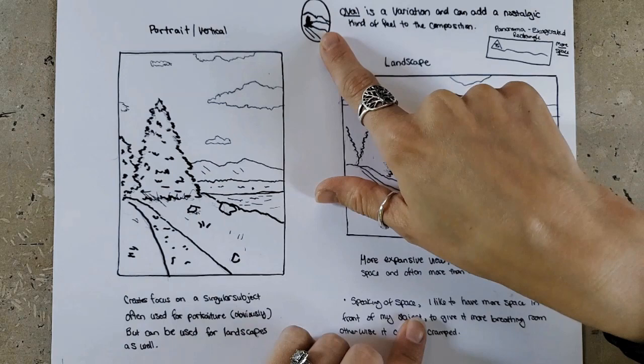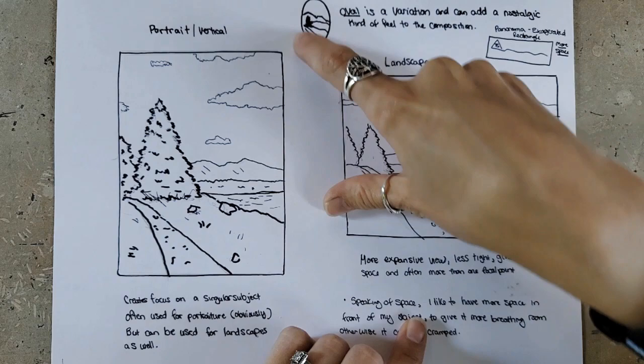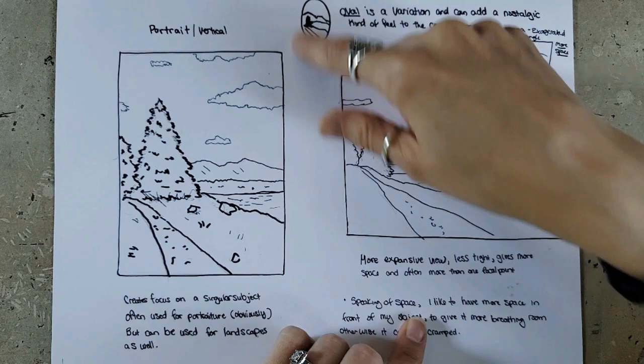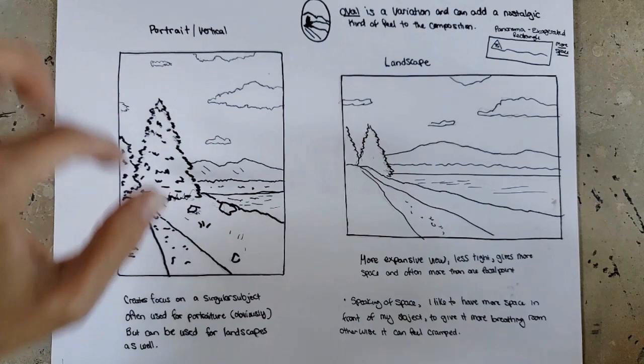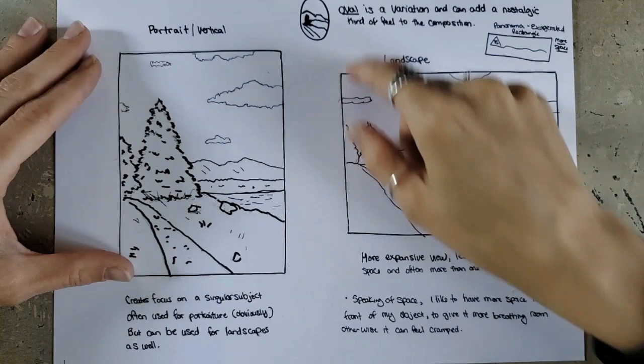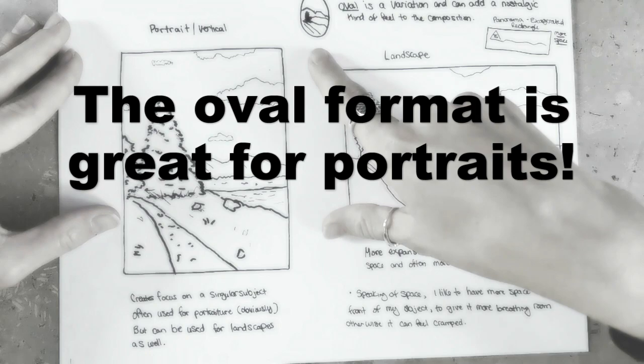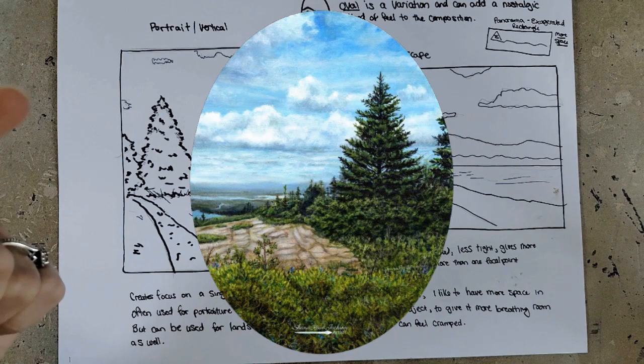There are variations of these formats. You have an oval shape, for instance, which could be used either way but I usually use it in a more vertical view. An oval is like a variation of our typical rectangular view. It can add a little bit of a nostalgic feel and it serves similarly to a portrait view, narrowing in on a specific subject. I've used the oval quite a bit with landscapes — I'll pop up one of my favorite landscapes I did using an oval view.